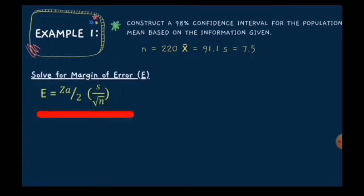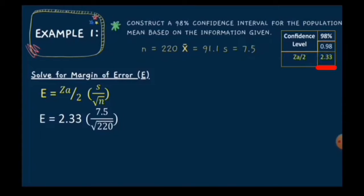Using this formula, since the confidence level is 98%, the confidence coefficient is 2.33. So we have 2.33 times the standard deviation 7.5, divided by the square root of the sample size 220. Using a calculator, the margin of error is 1.1782.